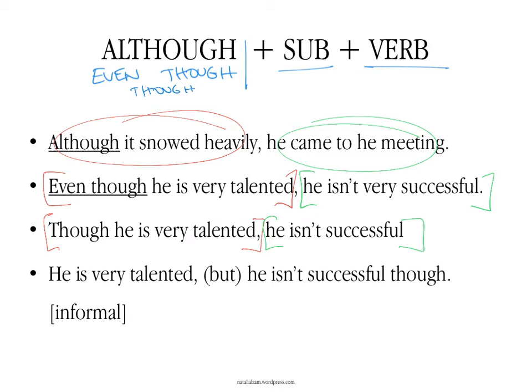In a very informal way you could say: he is very talented, but he isn't successful though. Or: he is very talented. He isn't successful though. This is much more frequent, but as I said, it is informal.